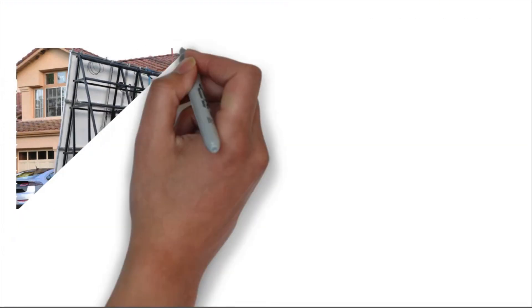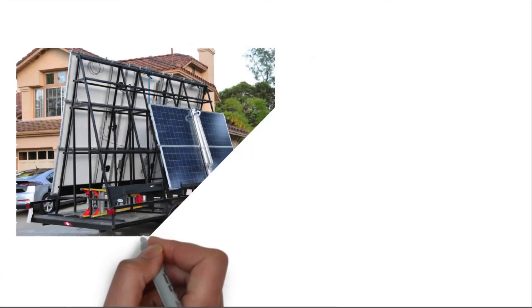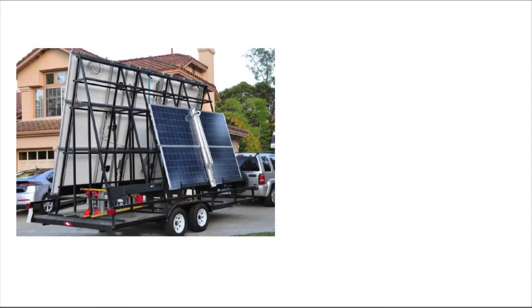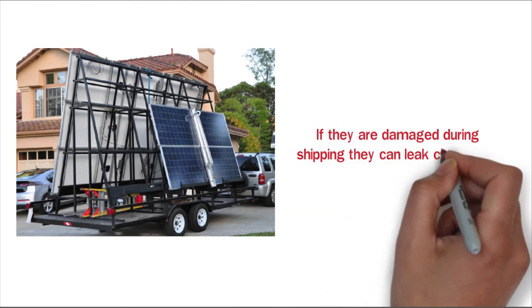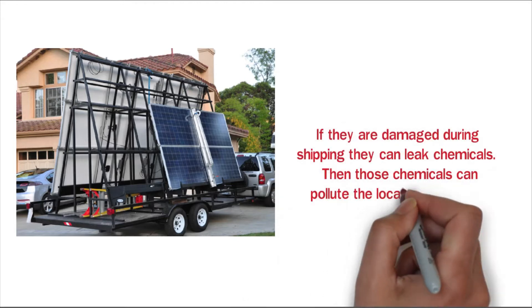Transporting the panels is also a challenge. Large community solar projects require large panels. These panels need to be transported carefully. If they are damaged during shipping, they can leak chemicals. Then those chemicals can pollute the local soil and water.